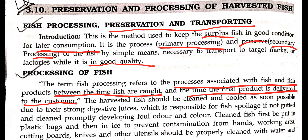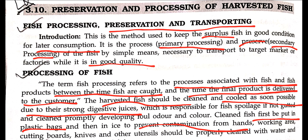The harvested fish should be cleared, cleaned, and cooled as soon as possible due to their strong digestive juices, which are responsible for fish spoilage. If not gutted and cleaned promptly, it develops raw odor and color. Cleaned fish should first be put in plastic bags and then in ice to prevent contamination. Cutting boards, knives, and utensils should be properly cleaned with water.